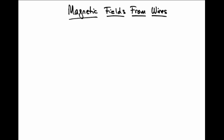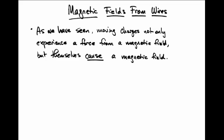The experiments we've just seen show that not only do the currents in a wire experience a force from a magnetic field, these currents apparently also cause magnetic fields. In other words, moving charges themselves cause a magnetic field around them.